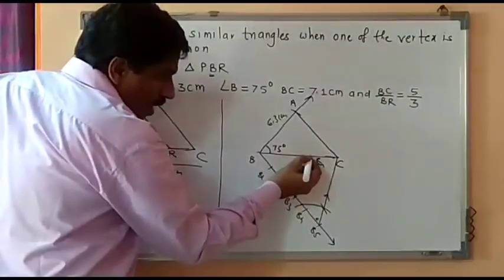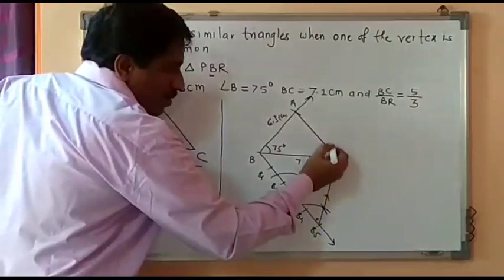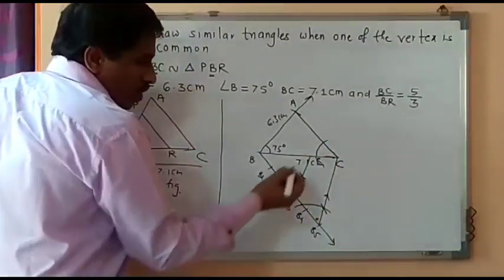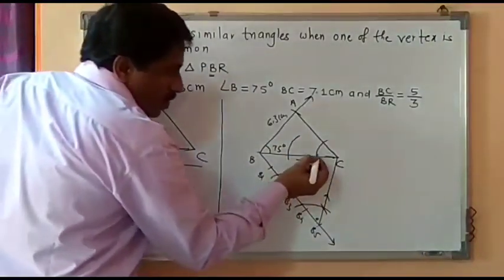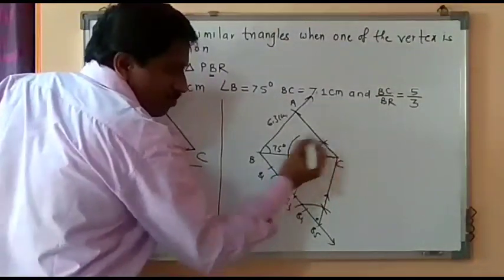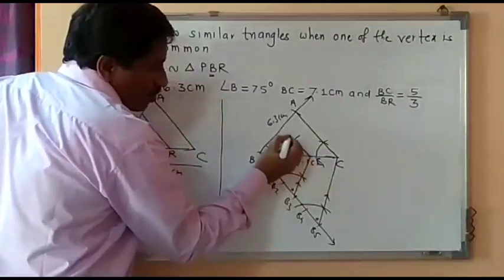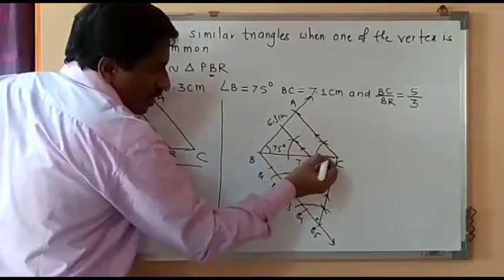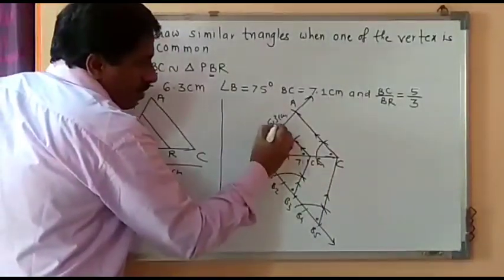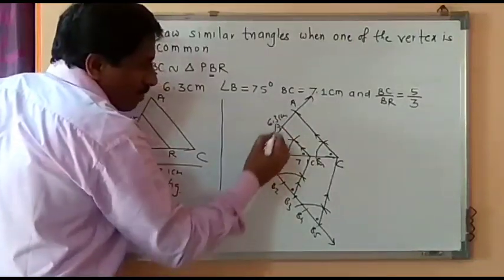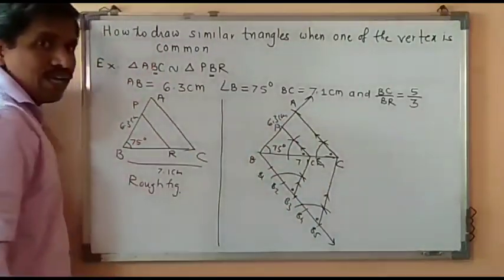Through point R, draw a parallel line parallel to AC. Keep a steel point on the angle, draw an arc, then keep the steel point on point R and draw an arc with the same radius. Take the distance between the two arms, draw the intersecting arc, and join. This line is parallel to AC as the corresponding angles are congruent. This gives us point P, and we get triangle PBR, which is similar to triangle ABC using AAS similarity.